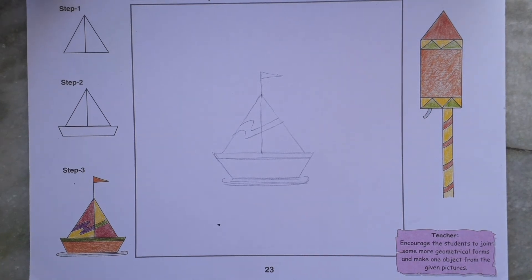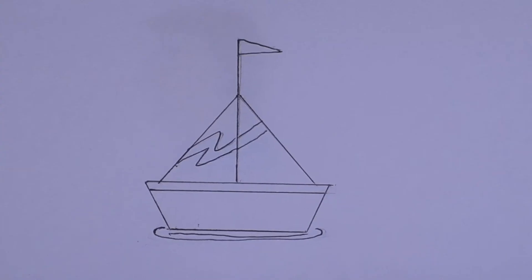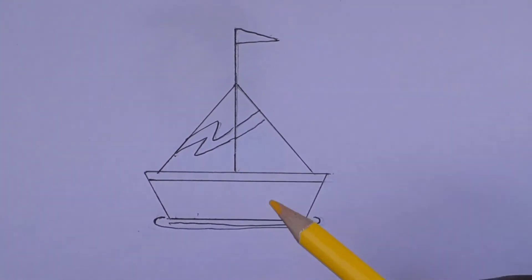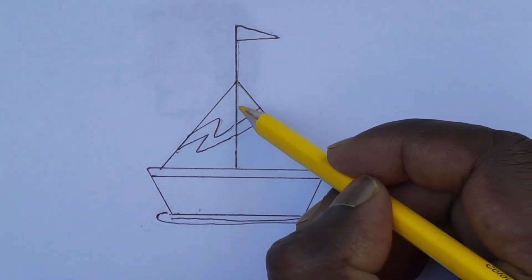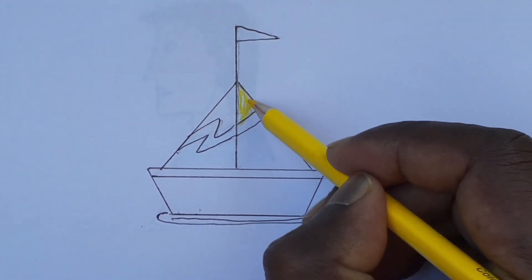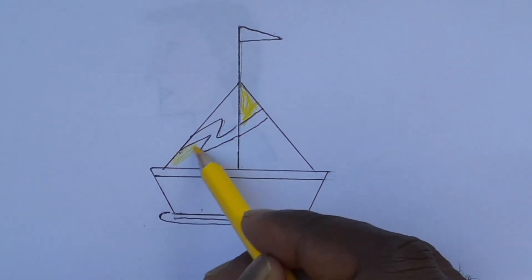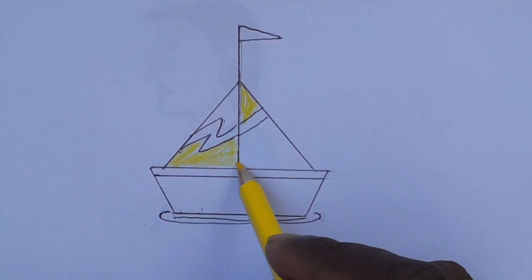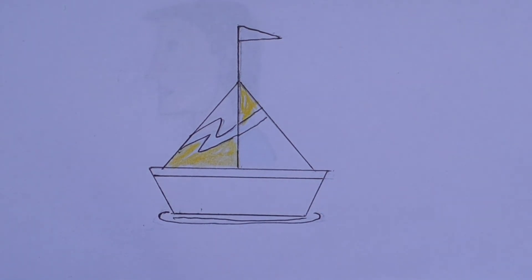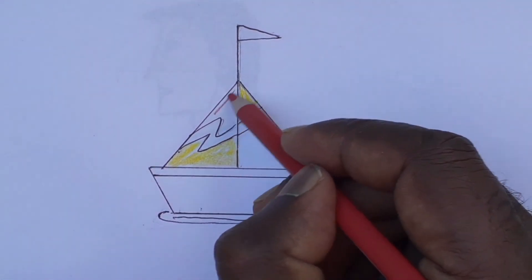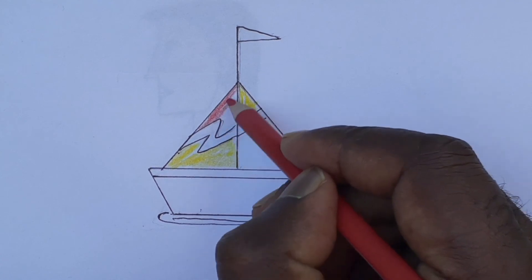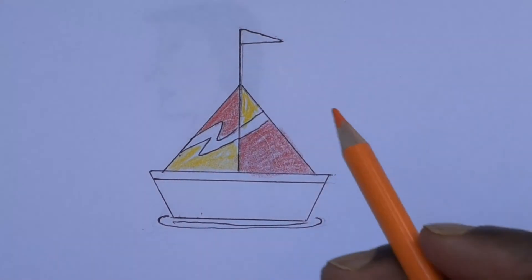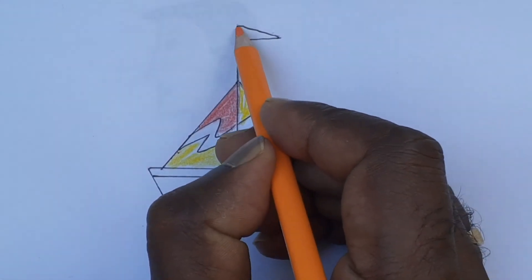Give outline with the help of black sketch or black pen. The drawing part is completed, let's start the colors. I am using yellow color here and here also. Take red color, and take orange for flag.